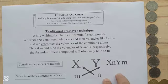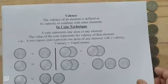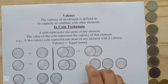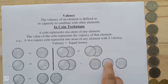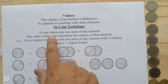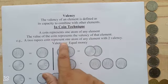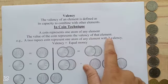So in this scenario, my coin technique has a role to play. First, we have to discuss valency in my coin technique. In the coin technique, a coin represents one atom of any element, and the value of the coin represents the valency of that element.